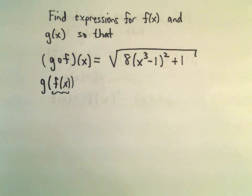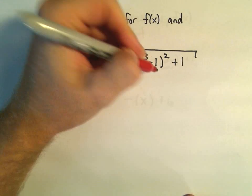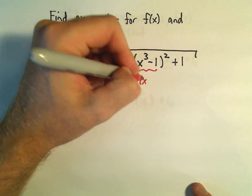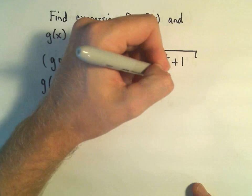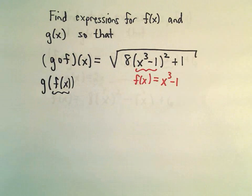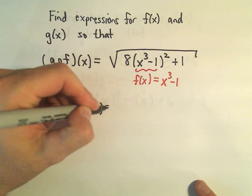And a lot of times on these problems, again, I just look what's in parentheses. So let's see. I think we could let f(x) be the function x³ - 1. And what are we doing to x³ - 1? Well, what's happening to that quantity is it's getting multiplied by 8.